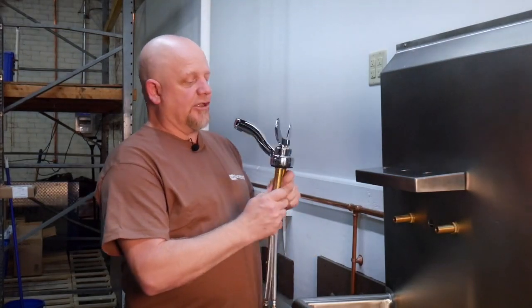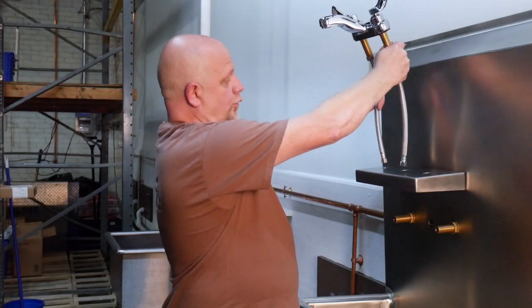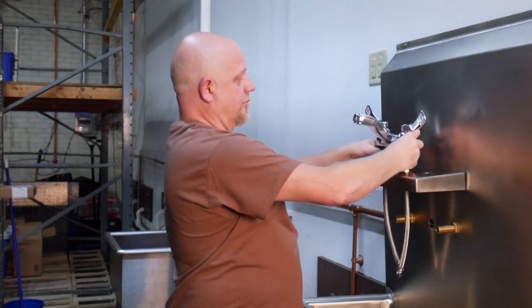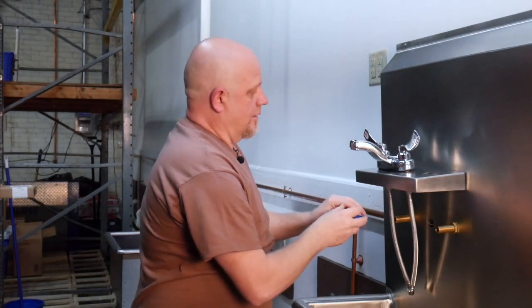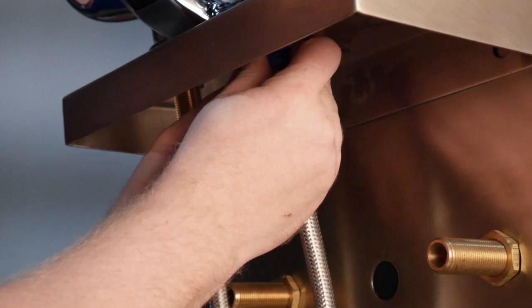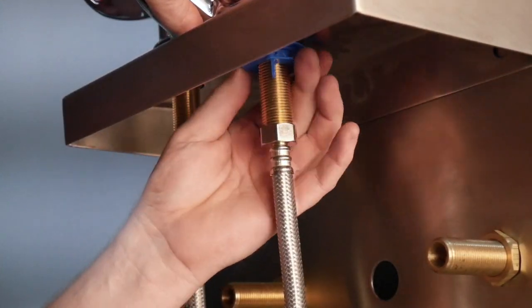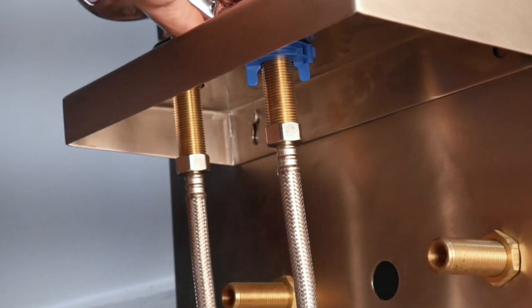In this case you can install the supply lines first, put them down through the holes and then you snap on your cinch nut. A few turns and it's tight.